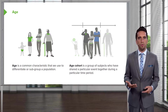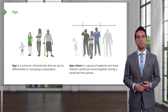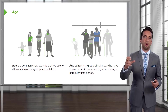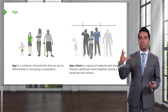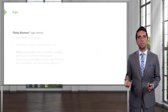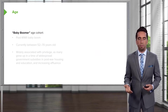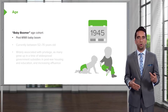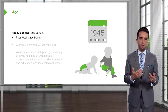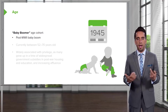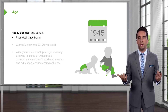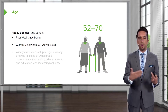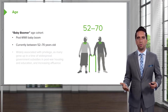An age cohort is a group of subjects who have shared a particular event together during a particular time period. You see this categorization or binning of the population based on that time period. An example is the baby boomer — a group of individuals born post-World War II. There was a nice influx of births, and those individuals right now would be roughly 52 to 70 years old.